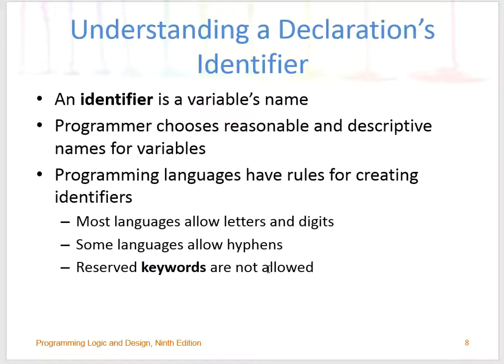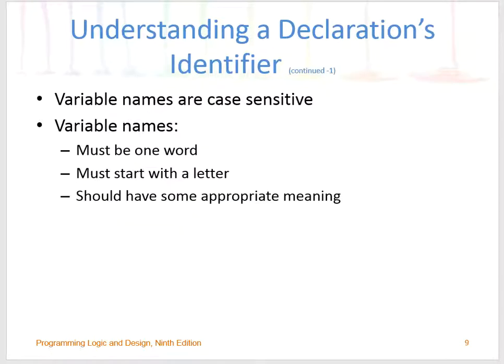Understanding declarations and identifiers: programming languages have rules for creating identifiers, and reserved words are not allowed. You cannot use any hyphen, and for the most part you should start with a letter. However, I recommend alphanumeric names to make them descriptive. They are also case-sensitive. A name can be one word or two words — I'm going to show you how to combine two words as we move forward.